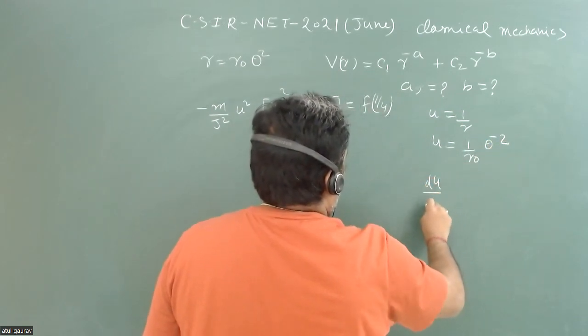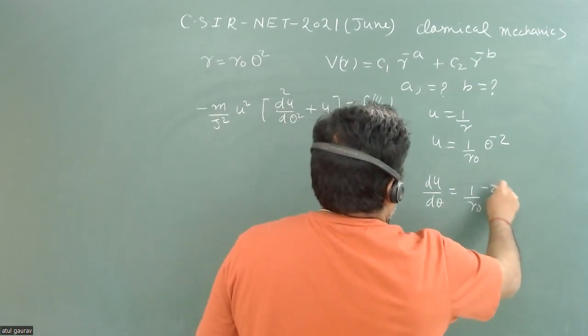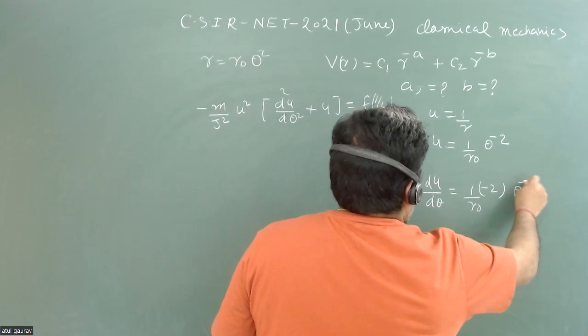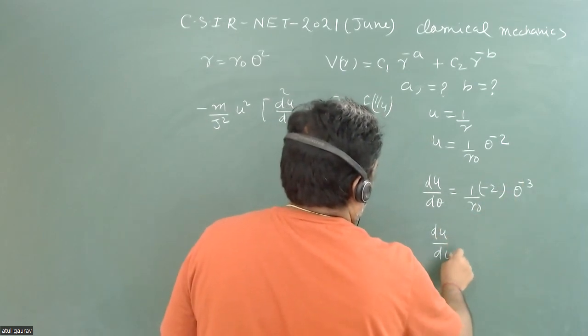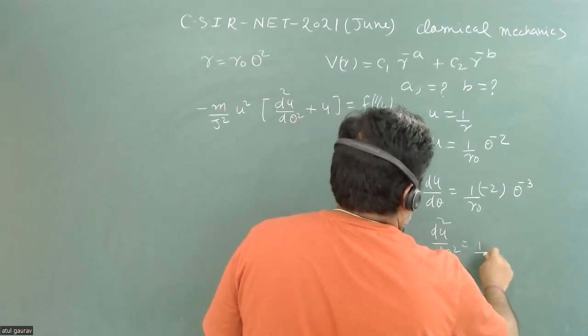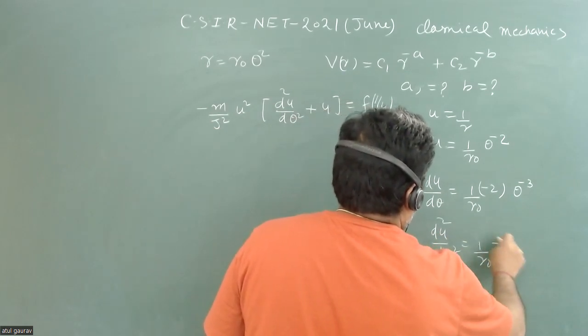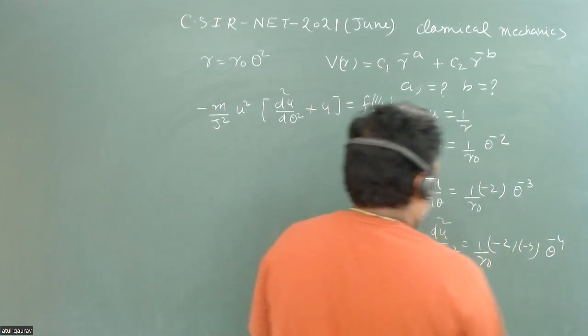So u here is 1 upon r naught theta to the power minus 2. And we can easily calculate du upon d theta is 1 upon r naught minus 2 theta to the power minus 3. And d square u upon d theta square is equal to 1 upon r naught minus 2 minus 3, and theta to the power minus 4.